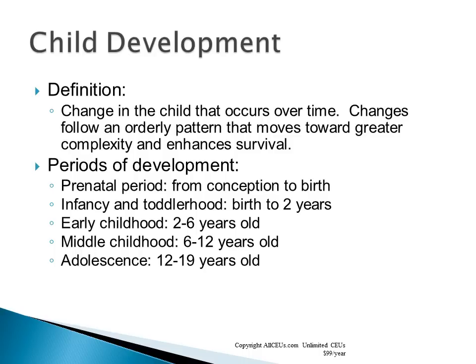We break child development down into several distinct periods: the prenatal period from conception to birth, infancy and toddlerhood, early childhood which is 2 to 6 years old — your preschool age — middle childhood from 6 to 12, and adolescence from 12 to 19 years old.